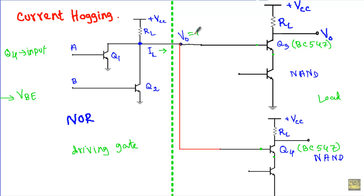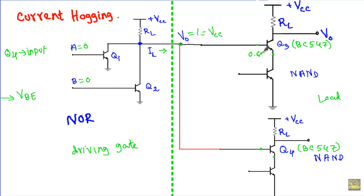Consider the case when the output is at a high state. If input A is at logic 0 and B is at logic 0, the NOR gate output is at logic 1, so I get an output voltage equal to VCC between the output terminal and ground. This produces a load current IL at the output terminal of the NOR gate. Since Q3 and Q4 have a difference in base-emitter junction voltage —